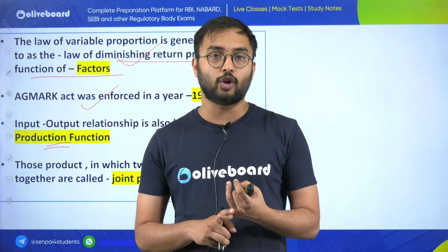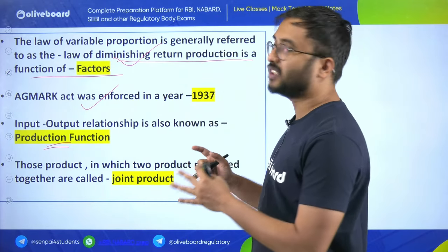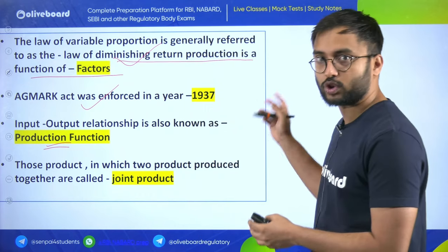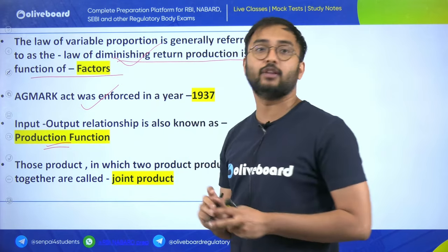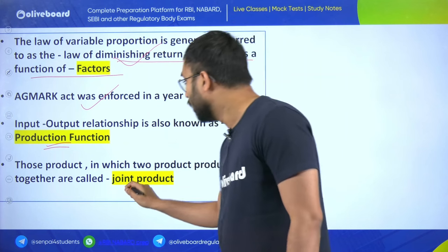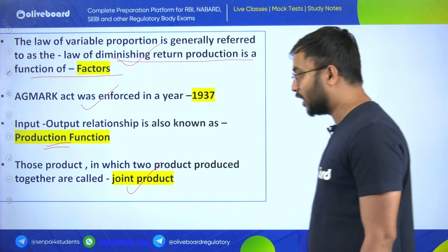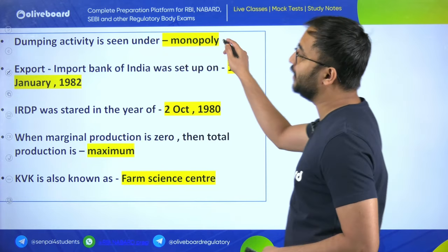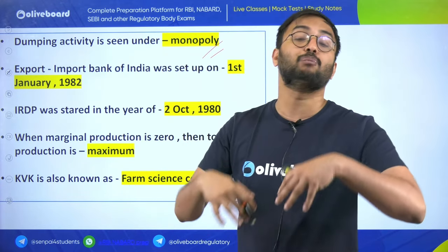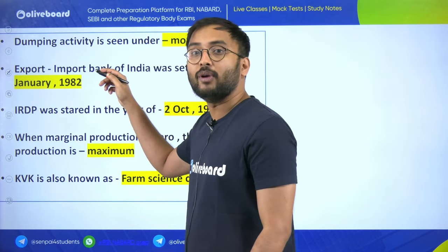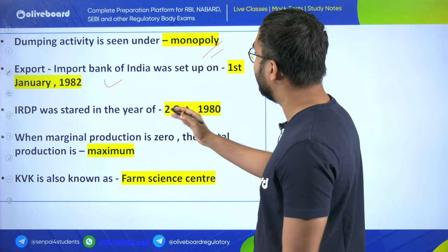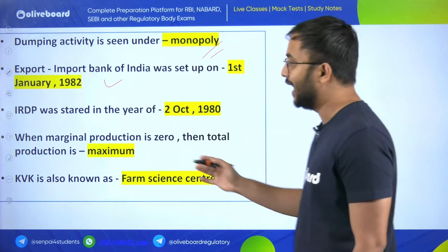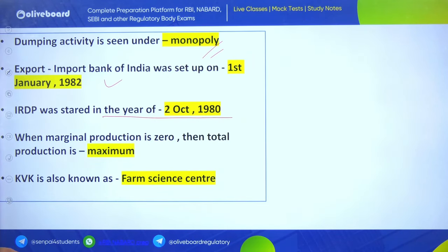From agriculture economics and finance, most questions relate to fixed cost, variable cost, production function, and law of diminishing return. Products in which two products are produced together are called joint products. Dumping activity is seen in monopoly. Export Import Bank of India was set up on 1st January 1982. IRDP was started on 2nd October 1980. When marginal production is zero, total production is maximum.